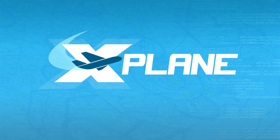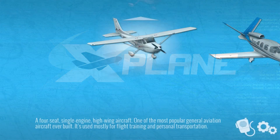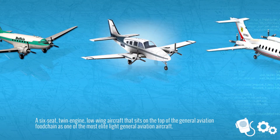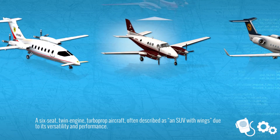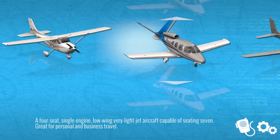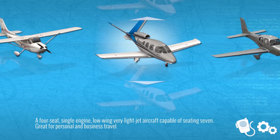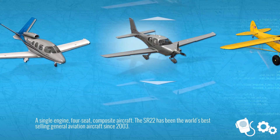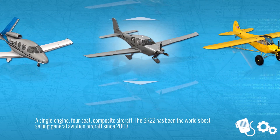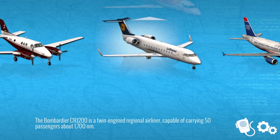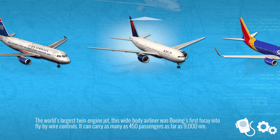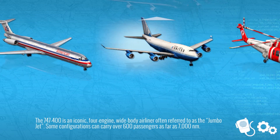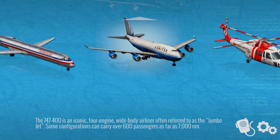X-Plane Mobile has three types of flight management computers. The Garmin 530, or G530, used by the Cessna 172, the Beechcraft Baron B58, and the Beechcraft King Air C90. Then the Garmin 1000, or G1000, used by the Cirrus Vision Jet SF50 and the Cirrus SR22. And finally, the Advanced Airliner FMC, used by the Bombardier CRJ200, the Boeing 737-800, the McDonnell Douglas MD-80, and the Boeing 747-400.